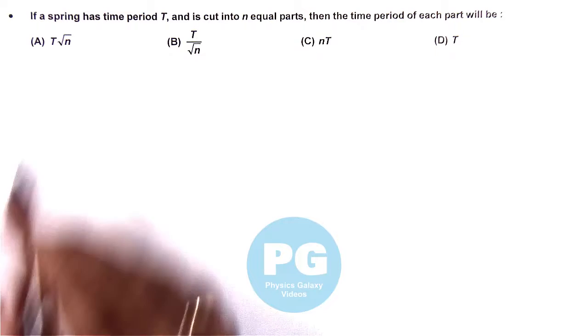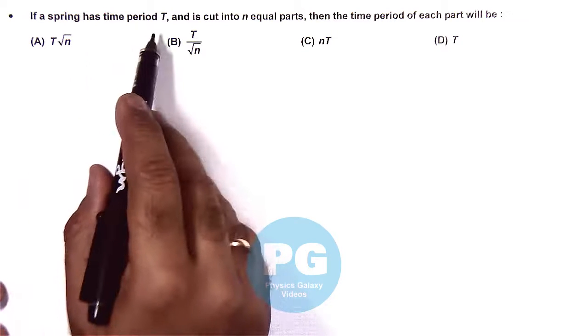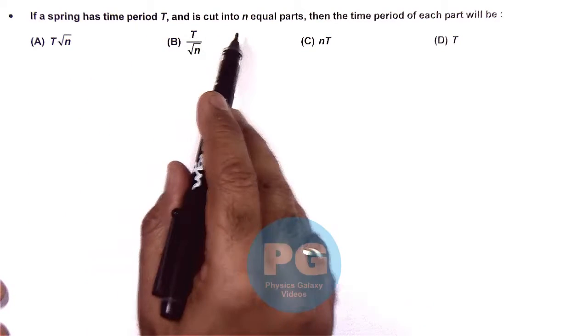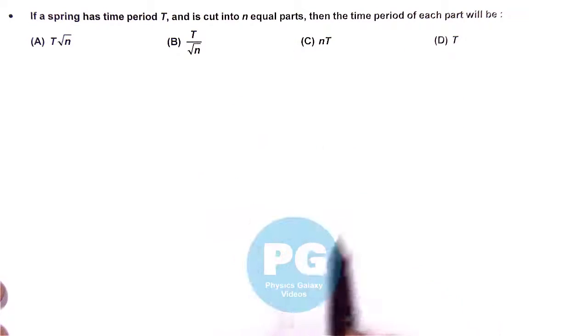In this question we are given that if a spring has time period T and it is cut into n equal parts, then the time period of each part will be.